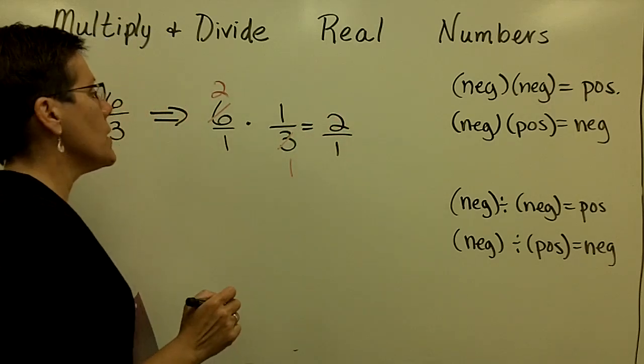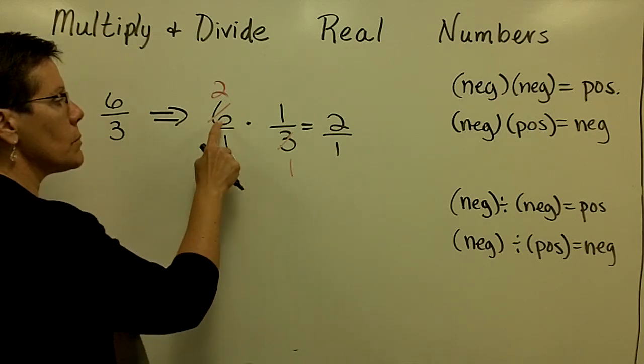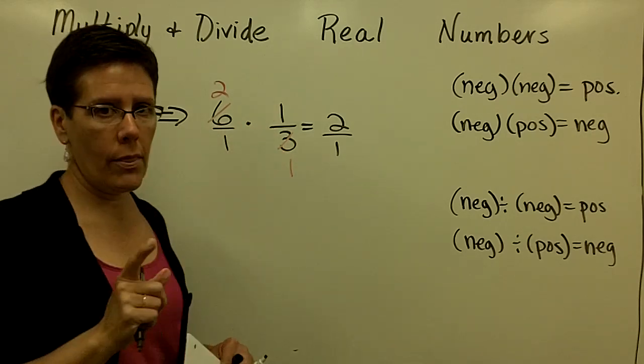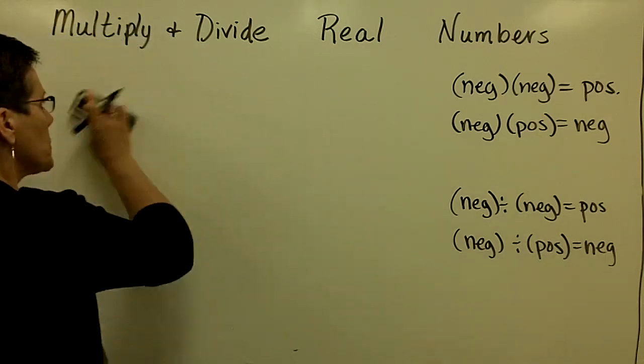Or 2 over 1. So 6 divided by 3, which we knew had an answer of 2, is the same thing as 6 times 1 third. So division problems follow the same rules as multiplication.